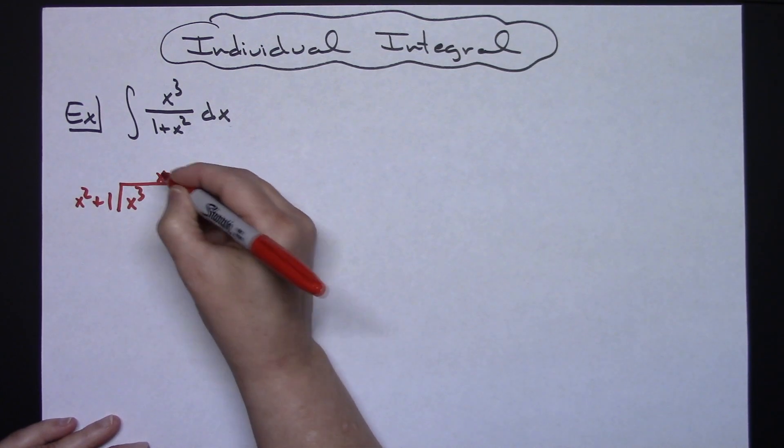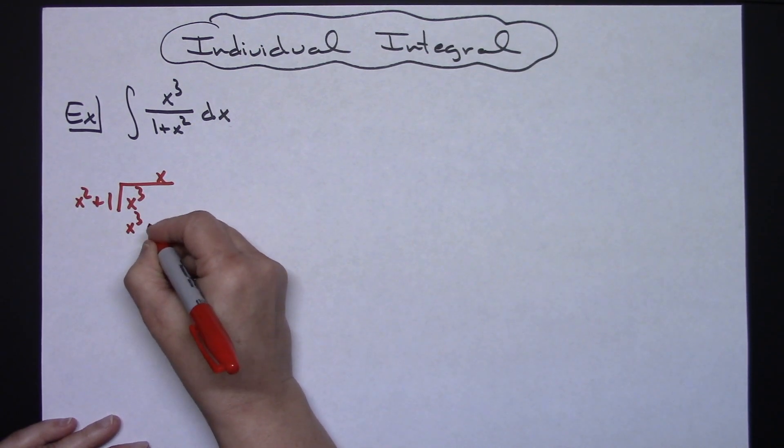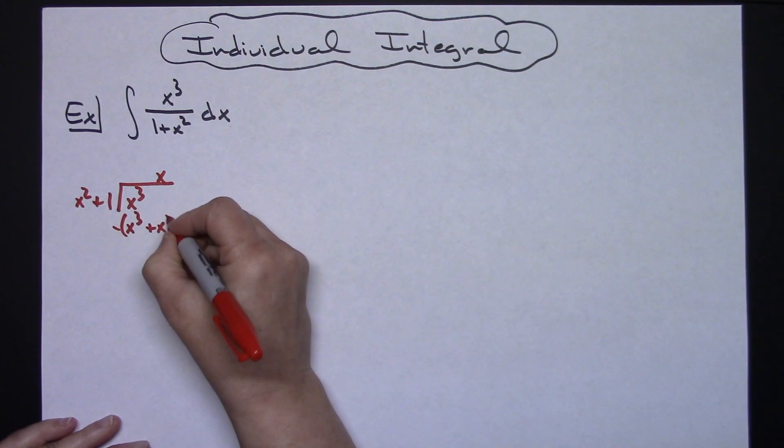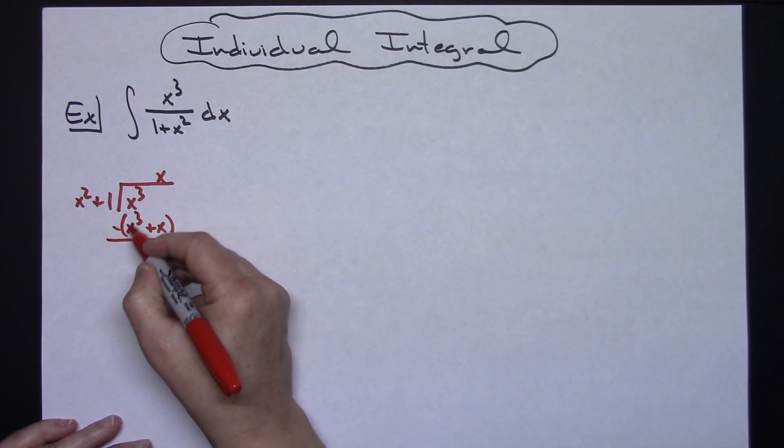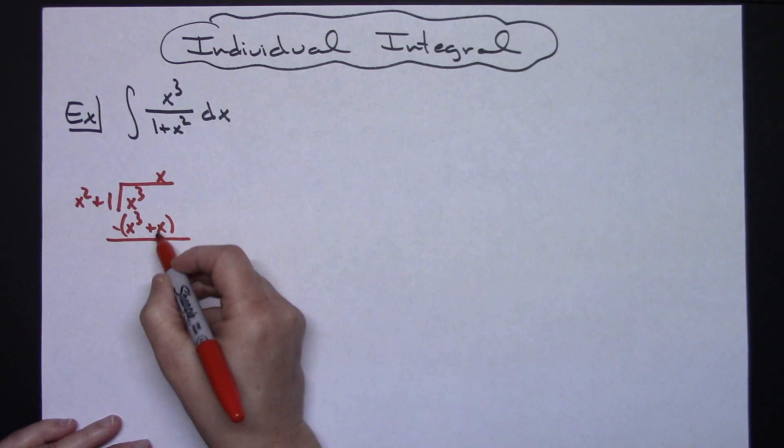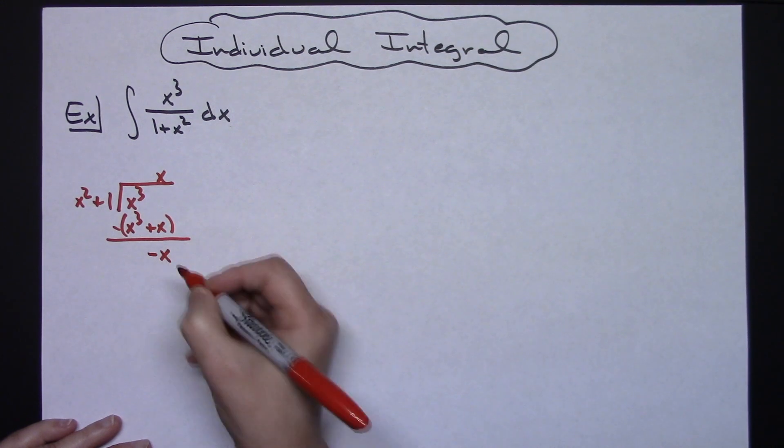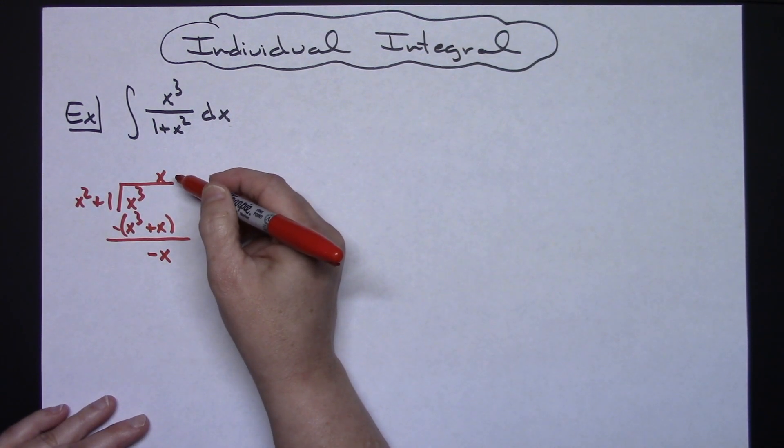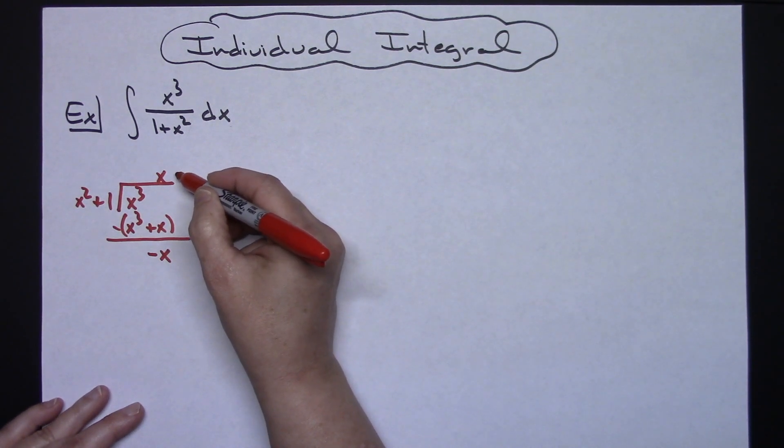All right, so x squared into x to the third goes x times. Multiplying that I'll have an x to the third plus x, and we are subtracting that quantity. So the x to the thirds are going to fall out, and then that's going to leave me with a negative x right here as my remainder.